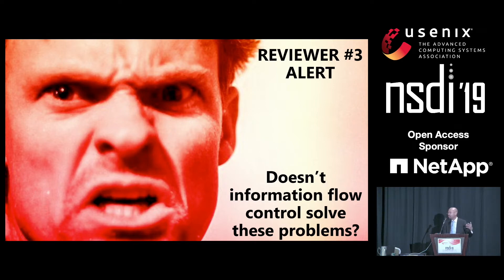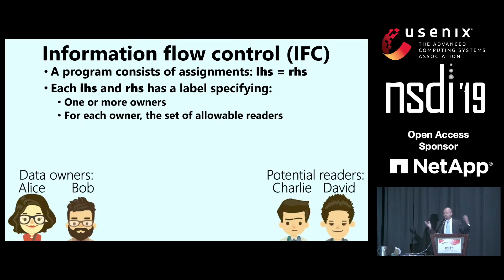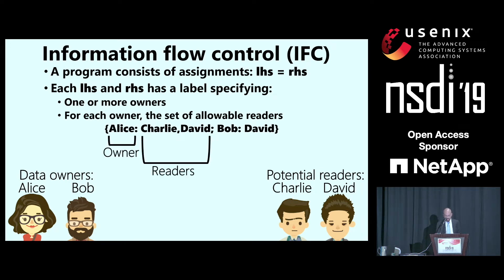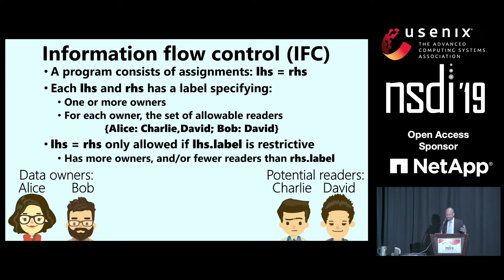Let's take a quick look at how traditional IFC works. The basic idea is that a program consists of assignments — a left-hand side equals a right-hand side — and each side has a label. A label specifies one or more owners, and for each owner the label specifies the set of allowable readers. So if Alice and Bob are data owners, and Charlie and David are potential readers, a label might say Alice allows her data to flow to Charlie and David, whereas Bob only allows it to flow to David. An assignment is only allowed if the label of the left-hand side is more restrictive — it has more owners and/or fewer readers than the right-hand side label.